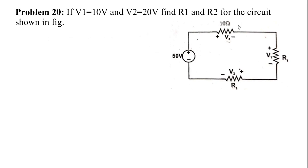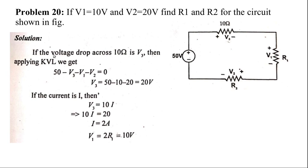Apply KVL: 50 − V3 − V1 − V2 = 0. Substituting V1 = 10 and V2 = 20 gives V3 = 20 volts. The current through the 10-ohm resistor is found from V3 = I × R: 20 = I × 10, so I = 2 amperes.